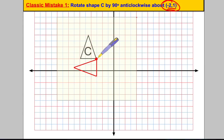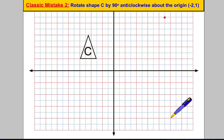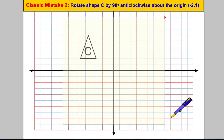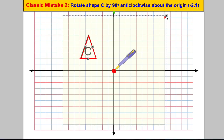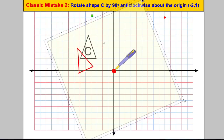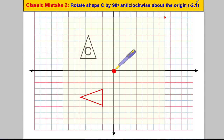Classic mistake two — the exact same question. What students do is assume the centre of rotation has to be the origin because they're so used to doing that. It is not always the origin. In this question we are told it's the point negative 2, 1. But students go ahead and perform the rotation around the origin, so they get anti-clockwise 90 degrees there — which is not correct this time. The centre of rotation is negative 2, 1, not 0, 0. Don't just assume it's the origin; be careful to read the question.